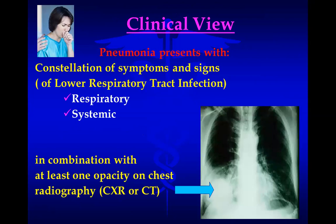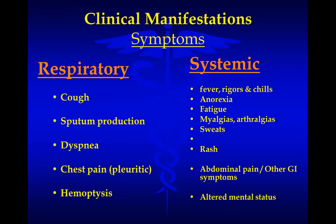From a clinical standpoint, pneumonia presents with a syndrome comprising a constellation of symptoms and signs of lower respiratory tract infection. Those can be specific respiratory symptoms and signs or systemic ones, and this should be combined with at least one opacity on chest radiography — meaning chest X-ray or CT scan.